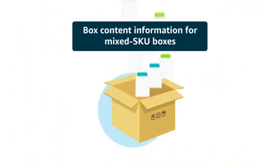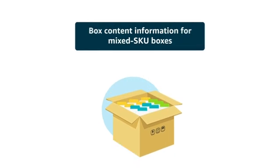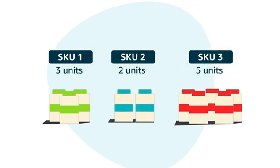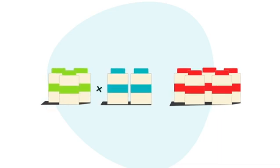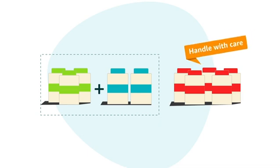If you are packing more than one SKU in a box, also known as mixed SKU boxes, you'll be prompted to enter the quantity of units of each SKU that you are shipping. Once you have confirmed the inventory that you want to send in mixed SKU boxes, we determine which SKUs can be packed together based on whether they require special handling at our fulfillment centers.